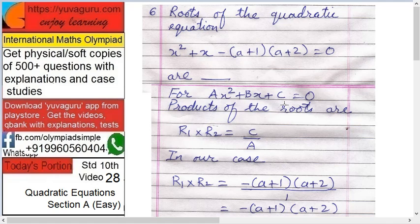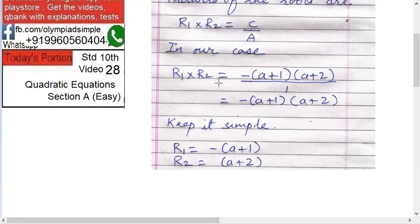Products of the roots is c upon a, right? In our case, r1 into r2 equals to c upon a, means minus (a plus 1) into (a plus 2) upon 1.